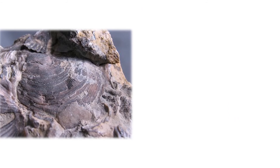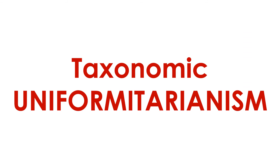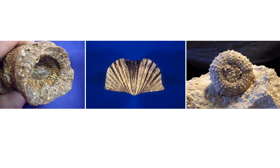This means that if we find a fossil, we can infer how it evolved and how it lived. Taxonomic uniformitarianism is the assumption that a fossil species inhabits the same environment and lives in the same way as its closest living relatives. For example, since corals, brachiopods, and echinoderms only live in the ocean today with no freshwater species, taxonomic uniformitarianism tells us that all fossils of these groups were produced by organisms that lived in the ocean.